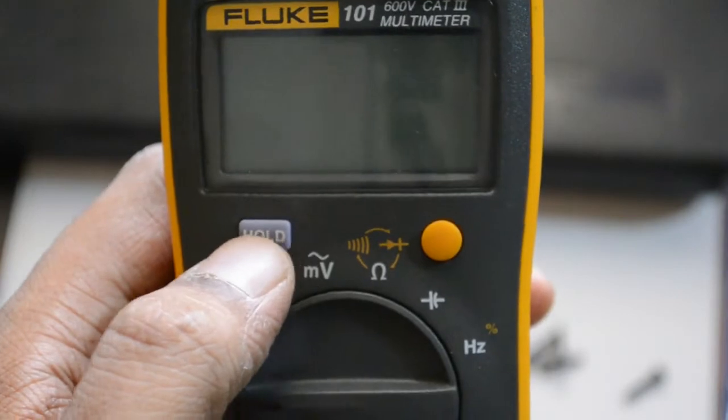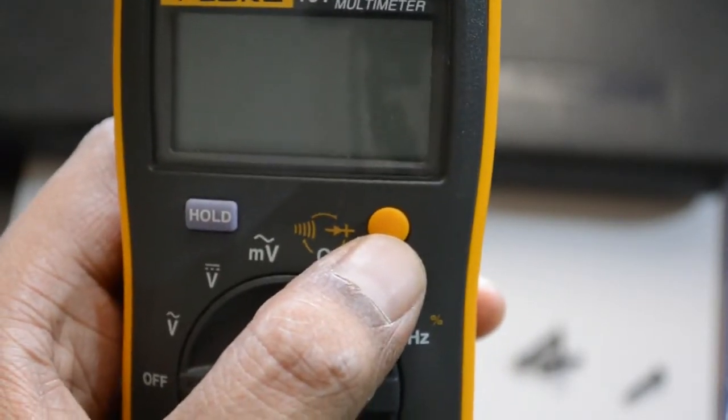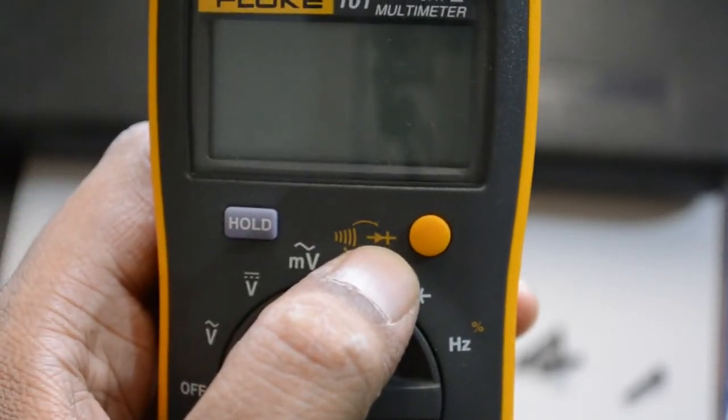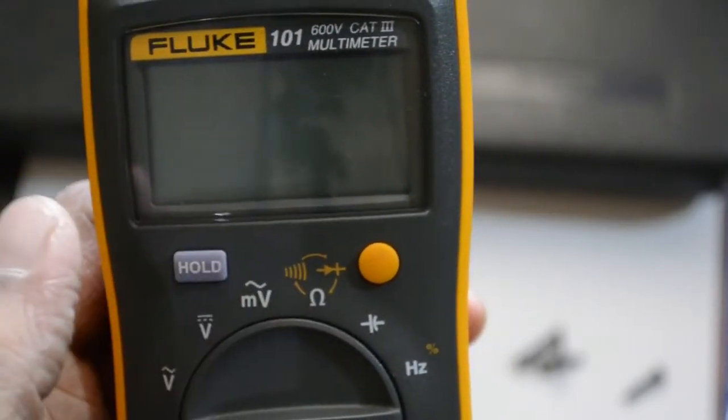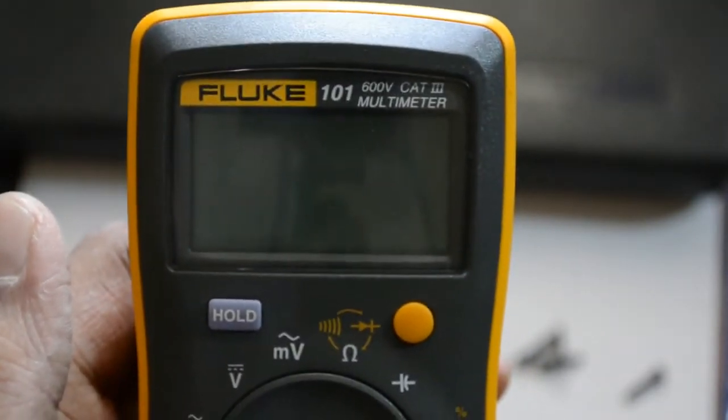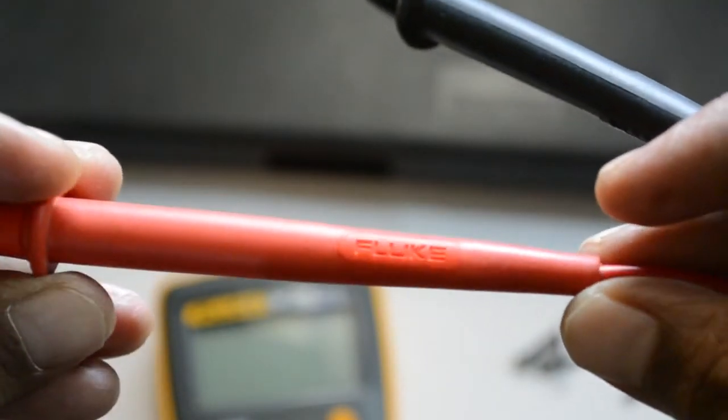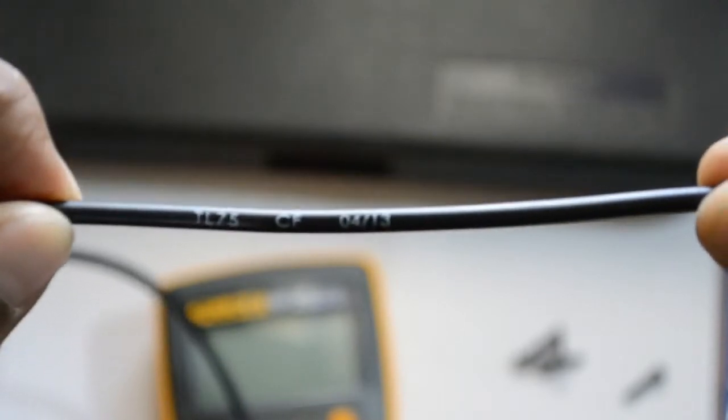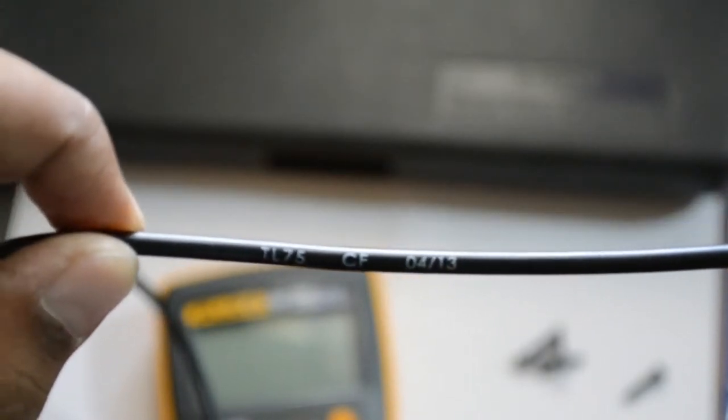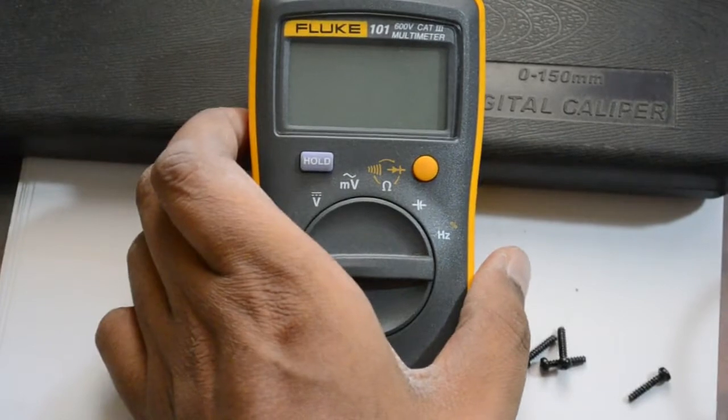And it actually holds the reading on the screen. This is to switch between continuity and diode testing. It's rated at 600V CAT3 and comes with these Fluke leads which I think are Fluke leads. Somewhere on the cable it says TL75, you can see it clearly. So I thought I would just do a little review on how this works.